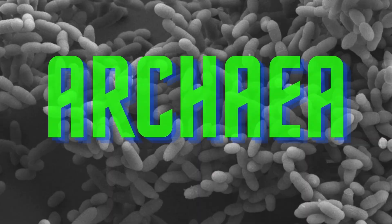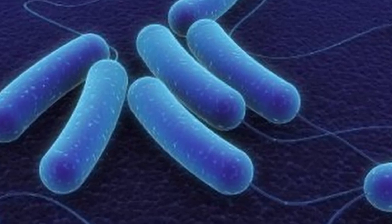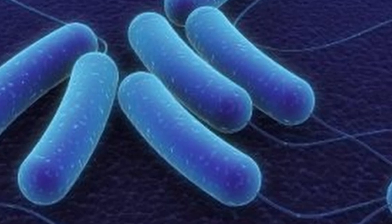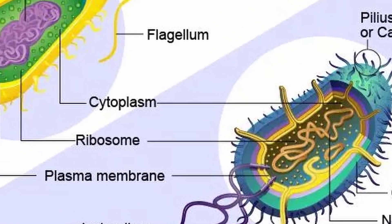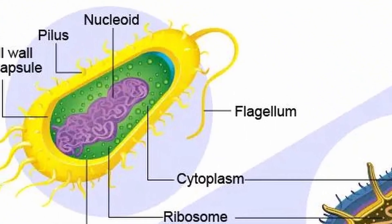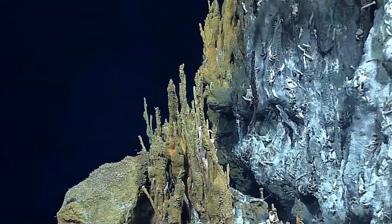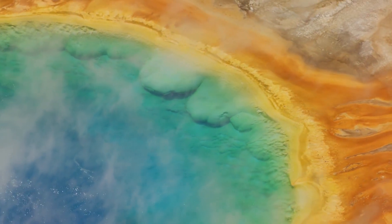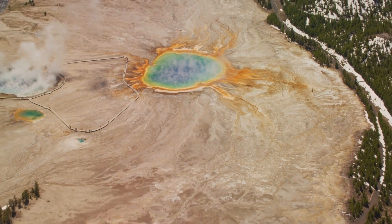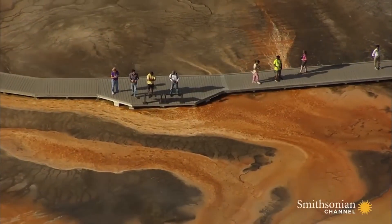We'll start with archaea. Archaea are single-celled organisms in the domain of archaea. They used to be known as archaebacteria, but these organisms have distinct characteristics that distinguish them from bacteria. Many archaea species are known as extremophiles, meaning they live in extreme environments — like the acidic, boiling grand prismatic hot springs of Yellowstone National Park. Each of the different colors of green, orange, and yellow you see are different species of archaea.